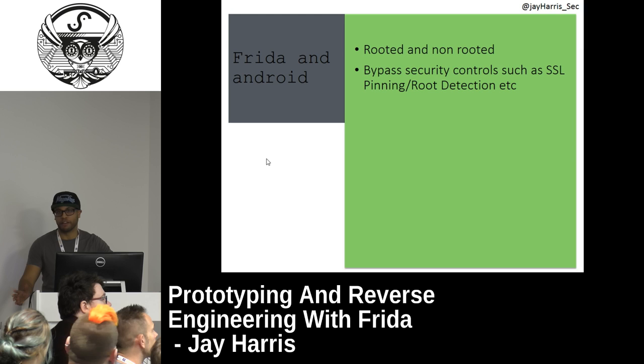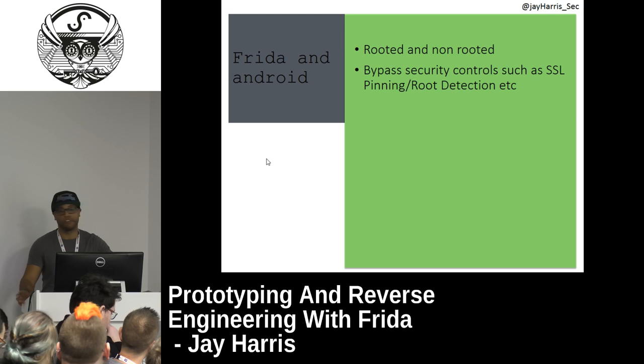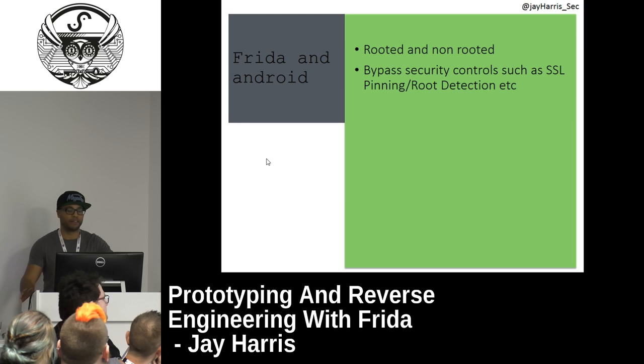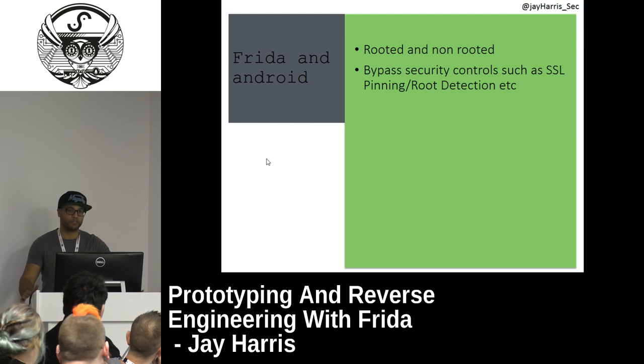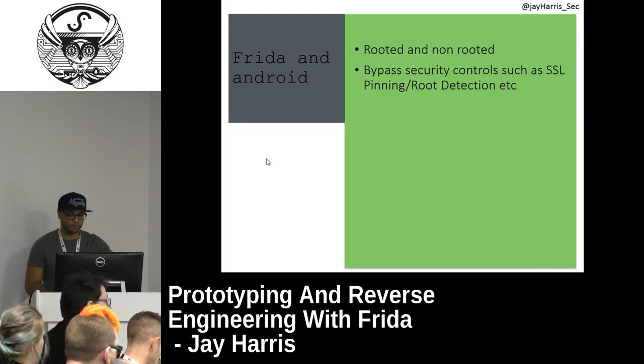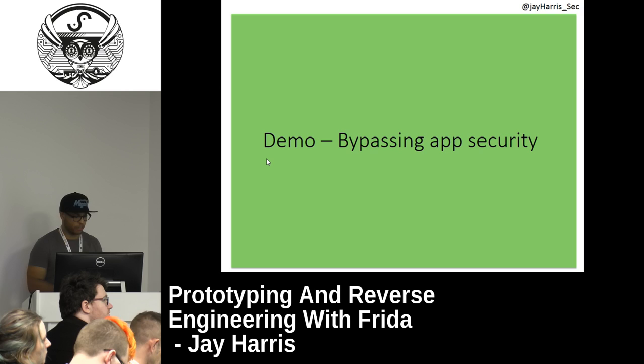It can be a bit of a pain to set up without root because you need to figure out how to do it before you can start using Frida, and of course you can't use Frida to figure it out. But it's better to do it this way so you don't need to bother about that — and then you can start to bypass the other controls you need to, such as SSL pinning or other security things. A problem arises when you also have tamper detection, where it detects whether the application has been modified — combined with root detection, that becomes a bit of a pain.